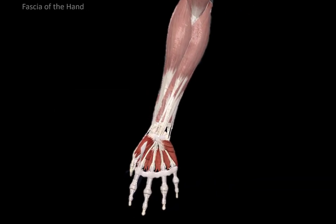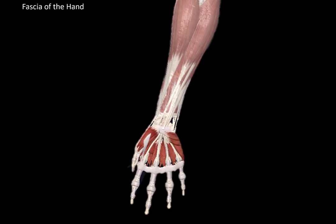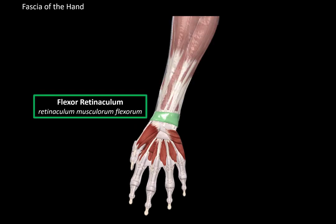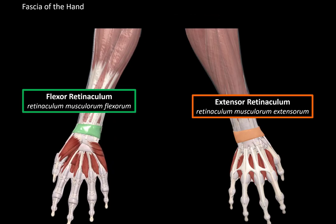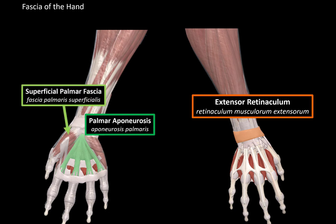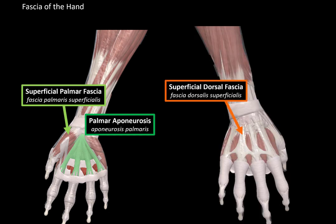Now let's do the fascia of the hand. The first things to address are the retinacula at the wrist. Once the antebrachial fascia reaches the wrist, it forms a thick band called the flexor retinaculum and an extensor retinaculum. These bands are crucial because they organize the blood flow and tendons of the forearm muscles into compartments. Other fascias associated with the hand include the palmar aponeurosis, which is a continuation of the deep fascia of the forearm that protects the underlying vasculature. Superficially to that is the superficial palmar fascia, while the dorsum of the hand has mainly the superficial dorsal fascia.